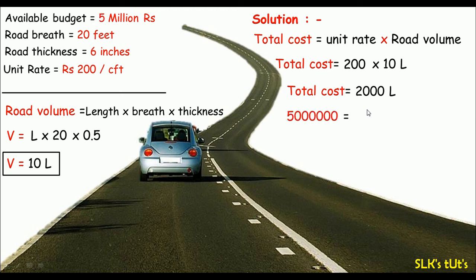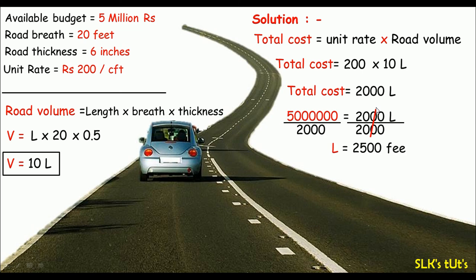So five million equals 2000 L. Dividing both sides by 2000, we get the length of the road equals 2500 feet. So if the company budget is five million, we can construct a road with a length of 2500 feet. And this is it.